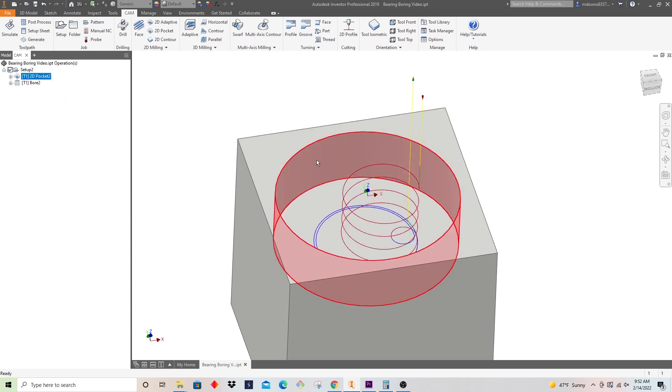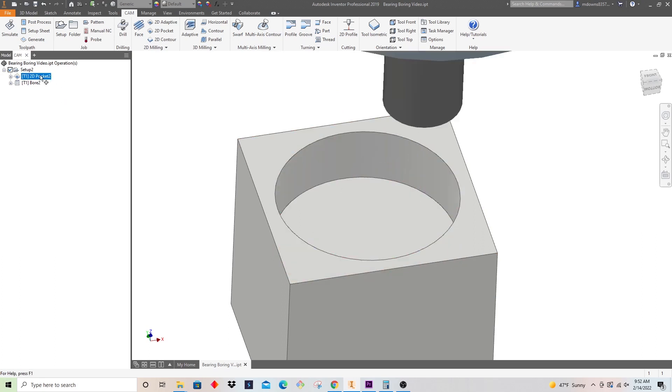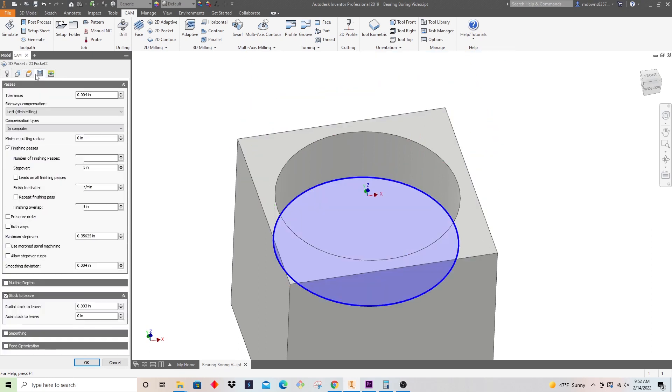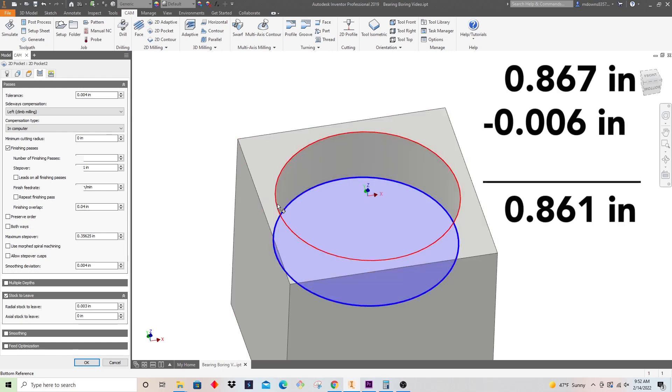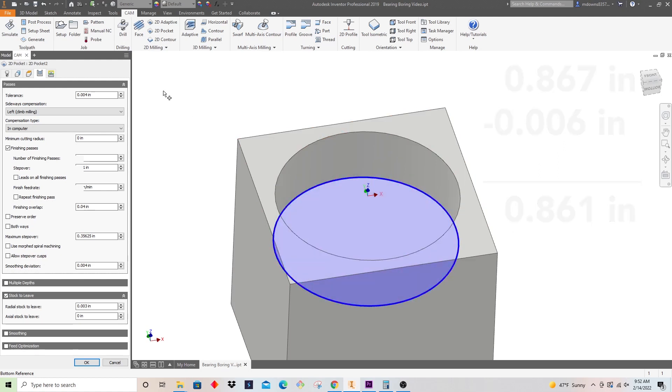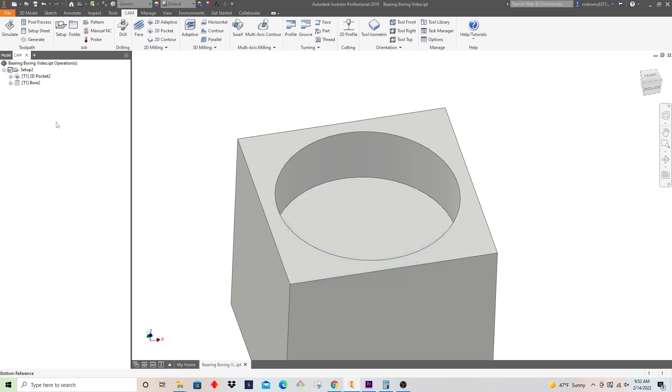So I'm using a 3/8 2 flute end mill and I left I believe 3 thousandths, yeah 3 thousandths of radial stock to leave. So if this bore nominally was 867, it's going to leave three thousandths all the way around. So if I were to measure this it'd really be undersized by six thousandths or 861 after finishing.